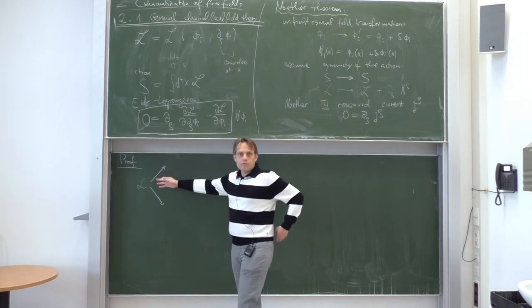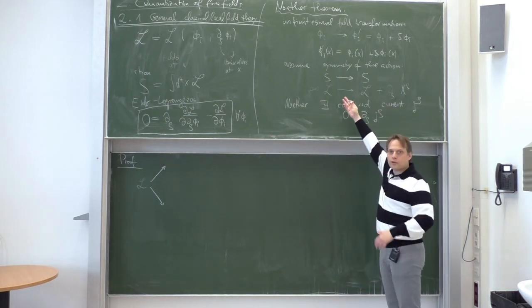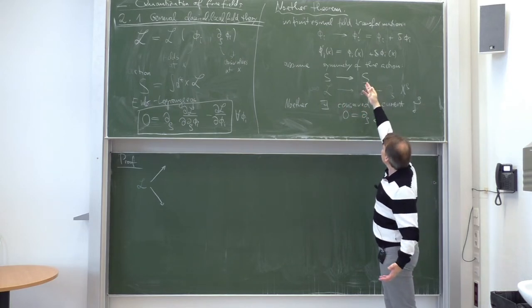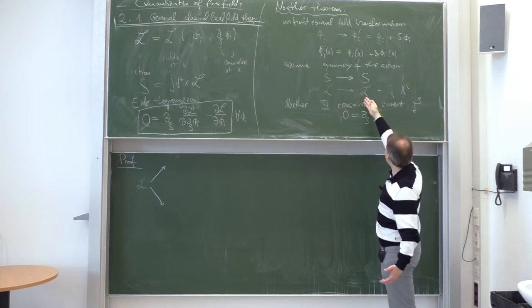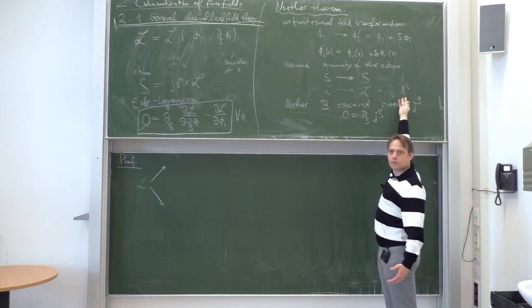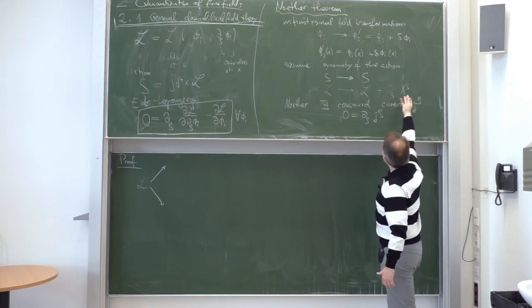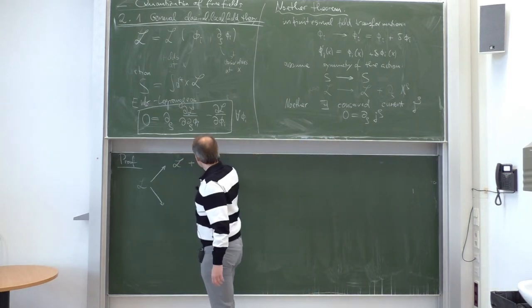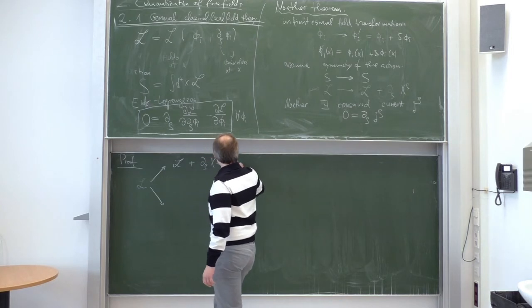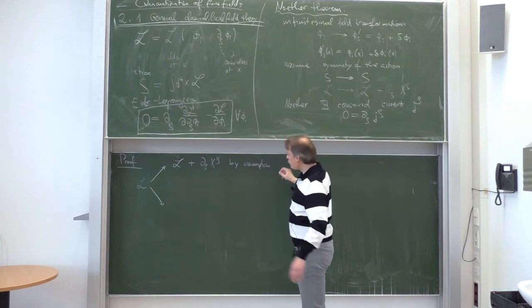The first way is our assumption. It means that somebody has done an explicit calculation, defined an explicit symmetry transformation, plugged it in, and found that the Lagrangian transforms in a specific way. This is the result of some calculation we cannot do in general, but for a given symmetry transformation it must follow from a concrete calculation.